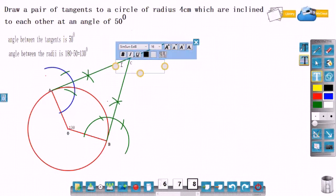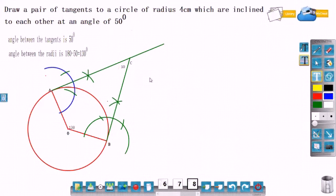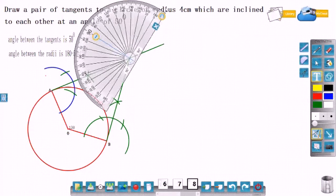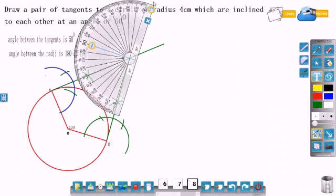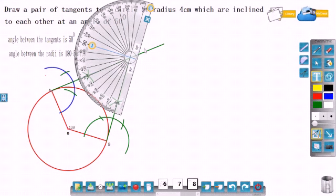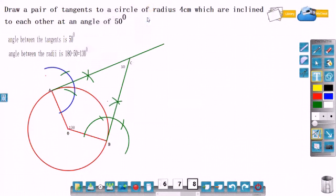Now AC and BC are the tangents. Angle ACB is 50 degrees. Now check the measurement using a protractor. See here, the angle is exactly 50 degrees.